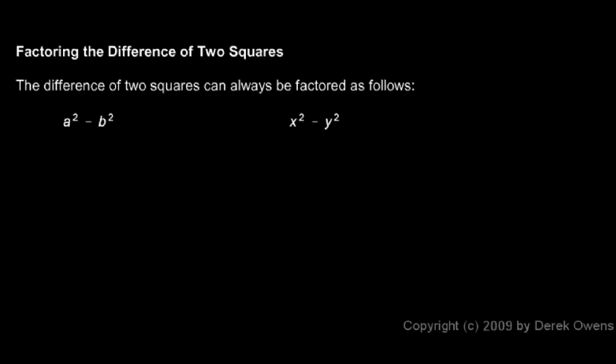Now the difference of two squares can always be factored like this. Notice the pattern here. a squared minus b squared will always be equal to a plus b times a minus b. So we've taken our original expression and broken it up into two factors. That same concept can be applied over here. Here, x squared minus y squared will always be factored as x plus y times x minus y. Again, we have two factors.